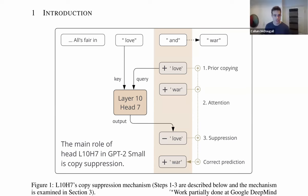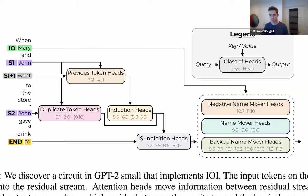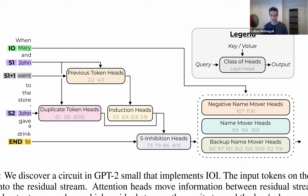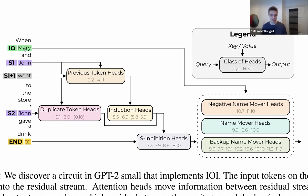Why did we look at this head? It initially came from work done by Arthur and others on the indirect object identification circuit. You have sentences of the form 'when Mary and John went to the store, John gave a drink to.' The subject token is John and the indirect object token is Mary. The indirect object identification task is to predict that the token after 'to' is Mary. There are heads which attend from 'to' back to Mary and boost the prediction of Mary. The very weird thing about this circuit is that although there are these name mover heads, there are also negative name mover heads which systematically attend back to the correct Mary token in order to suppress the prediction for that token - which seems actively working against what the model is intending to do, since Mary is the correct answer.